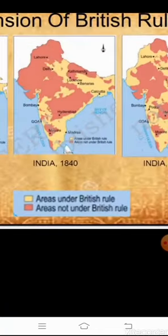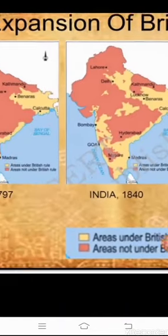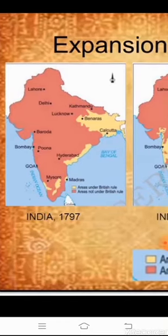Here is a map showing the expansion of British territorial power in India. Looking at this map, you can compare the area marked in yellow — which shows the area under British rule — for the years 1797, 1840, and 1857. You can see that the yellow area keeps increasing, showing how British rule expanded significantly over time.